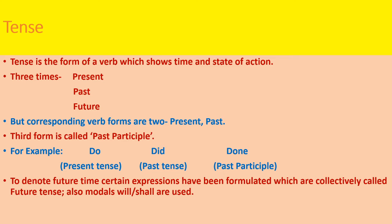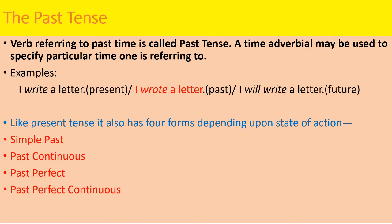The third form of the verb is called past participle. For example, take the verb 'do' — do, did, done. So the word 'done' is called the past participle. It is not the future tense. So in English language and English grammar, to denote the future time, certain expressions have been framed by the grammarians which are collectively called future tense. Besides these formulations, the modals like 'will' and 'shall' are also used to represent the future tense. So let us learn about the past tense.